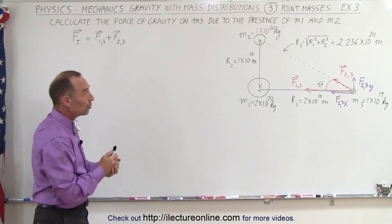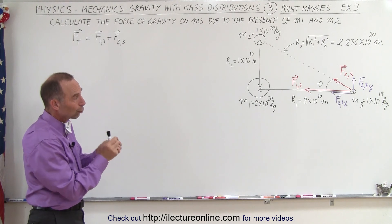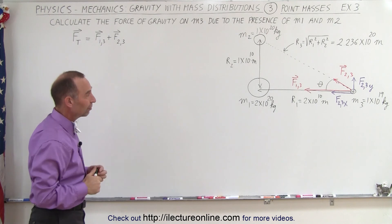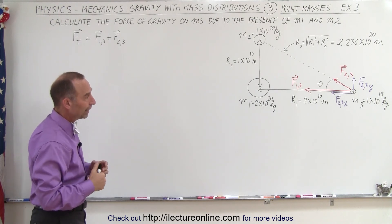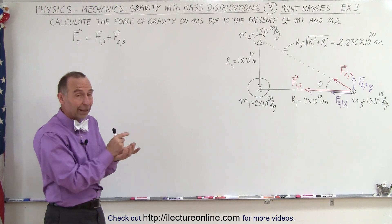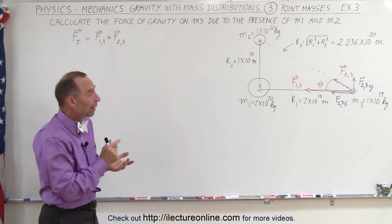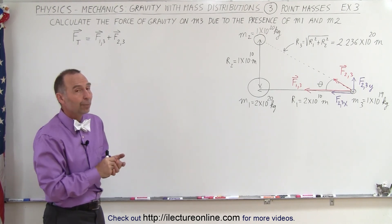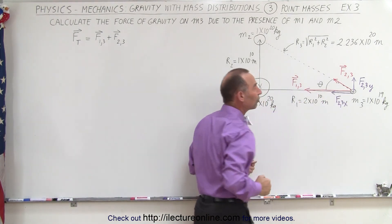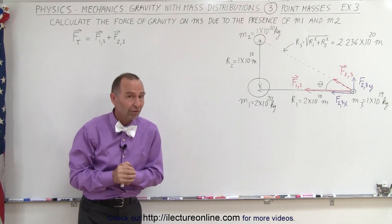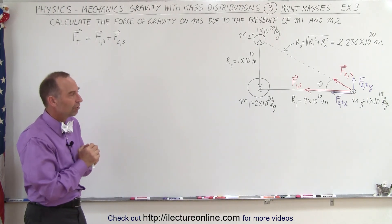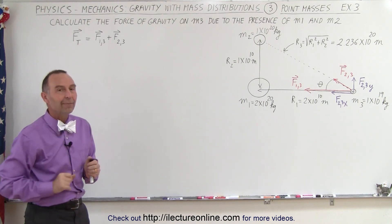What we're still trying to do is find the total gravitational force on M3 due to the presence of the other two masses. The procedure will still be the same: we're going to find the magnitude of F13 and the magnitude of F23, but then we're going to have to find the components of each of the forces so we can add the components together. Whenever we add vectors, we add the X components together and the Y components of each of the vectors. So let's find the magnitudes first.